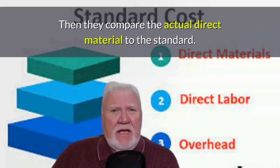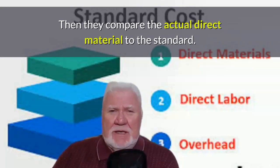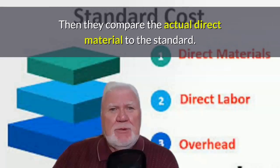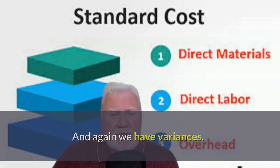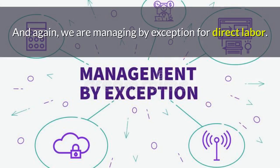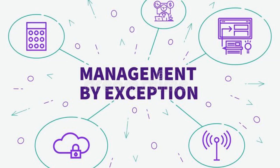Then they compare the actual direct material to the standard, and again we have variances and again we are managing by exception. For direct labor we have standards for time, and we compare the direct labor time to the standard that has been set.